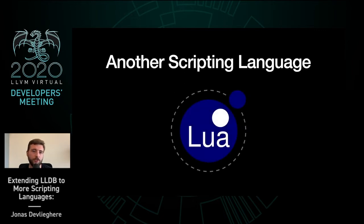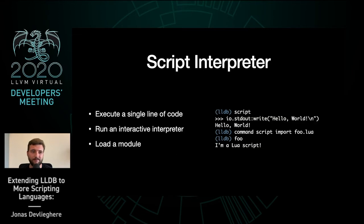For my new scripting language, I wanted something small and easy to embed. This made Lua the obvious candidate. And if there's anything I learned from Python, it's that you really want a scripting language that's incompatible between major versions. Adding support for a new scripting language starts by implementing the corresponding script interpreter plugin. This plugin powers commands such as script and command script import, and its main functionality consists of running one or more lines of code and importing modules. LLDB's Lua plugin manages the Lua runtime and acts as the intermediary between it and the rest of LLDB.